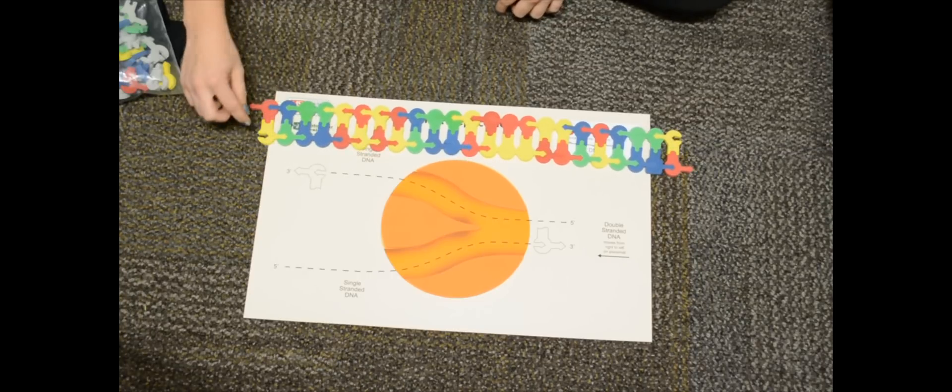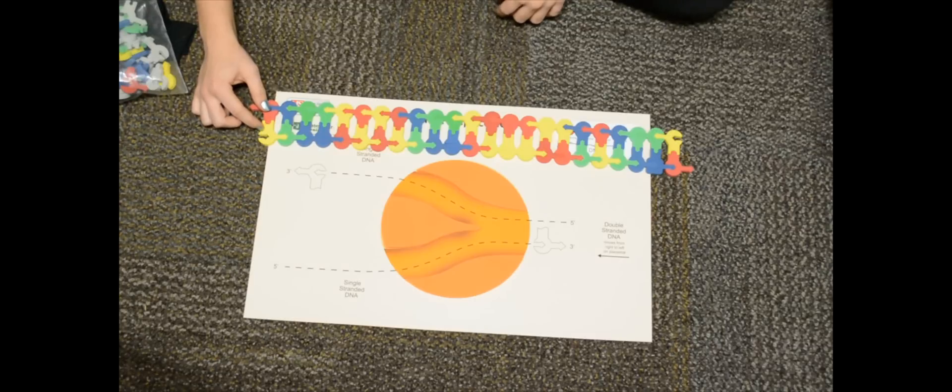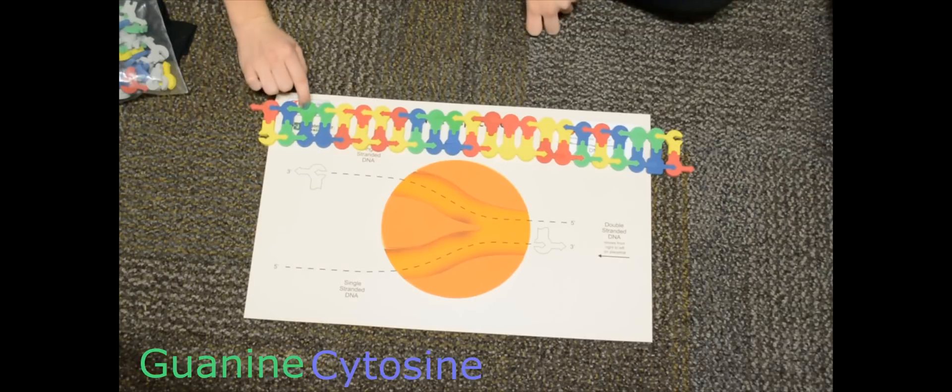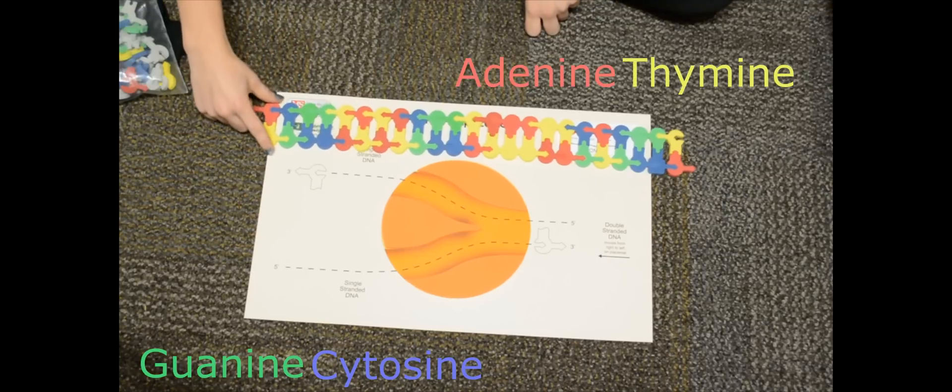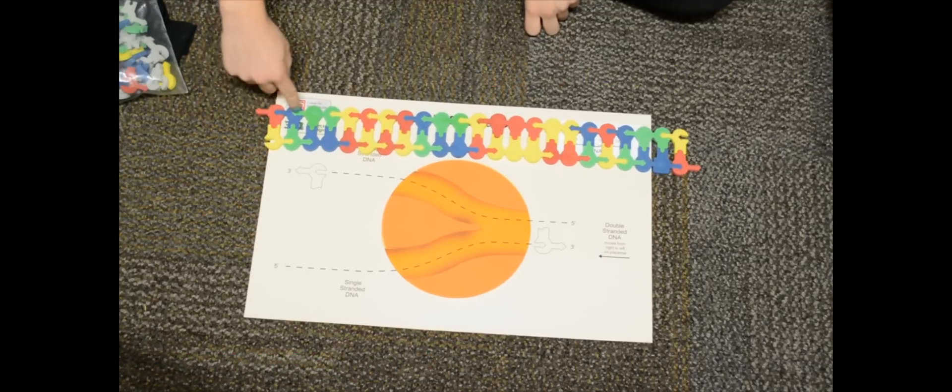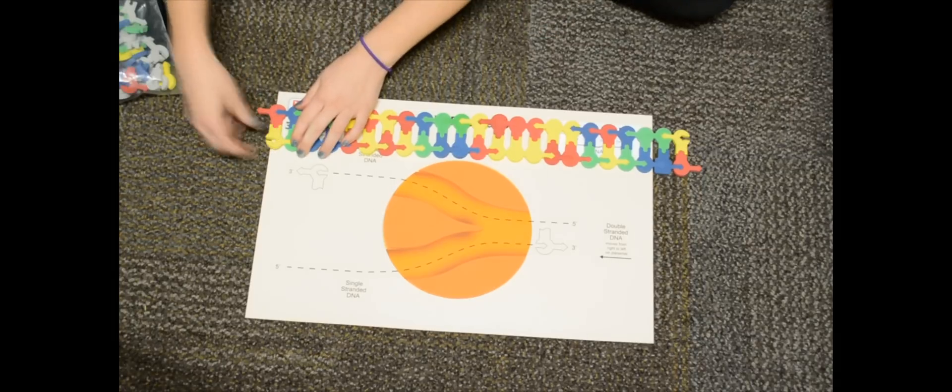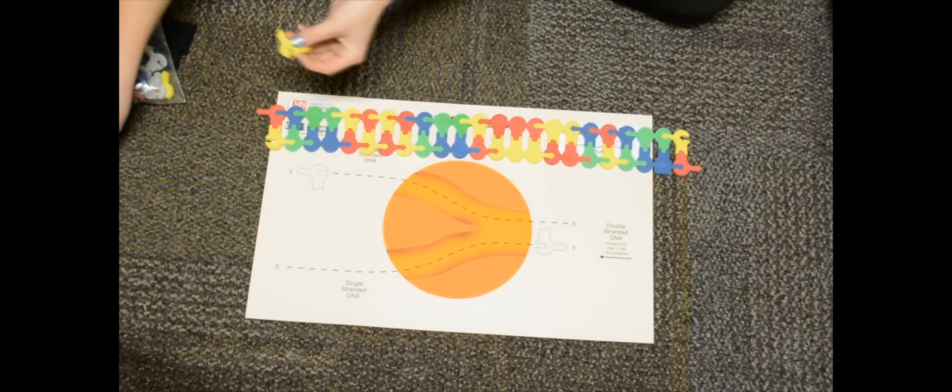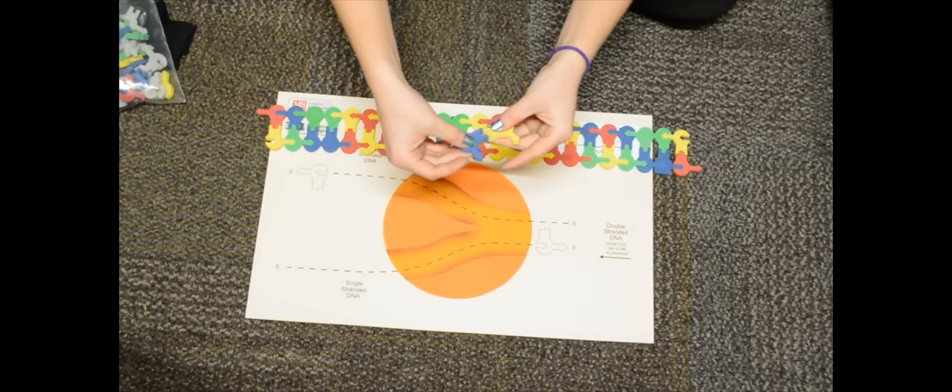These are the base pairs. You have guanine that pairs with cytosine and adenine that pairs with thymine, and those are the only two combinations you can have. You can't have a yellow and a blue because if you look at their shapes, they actually won't fit together. That's just how they work.